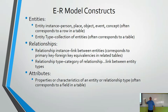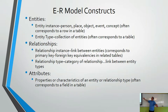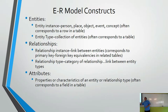A relationship type is the connection between two entities — for example, professor to student. A relationship instance is the specific connection between two instances of data: I'm an instance of a professor, each of you is an instance of a student, and the relationship instance is the particular connection from me to you individually. Attributes are the properties and characteristics of an entity or relationship type — for example, your name and date of birth.